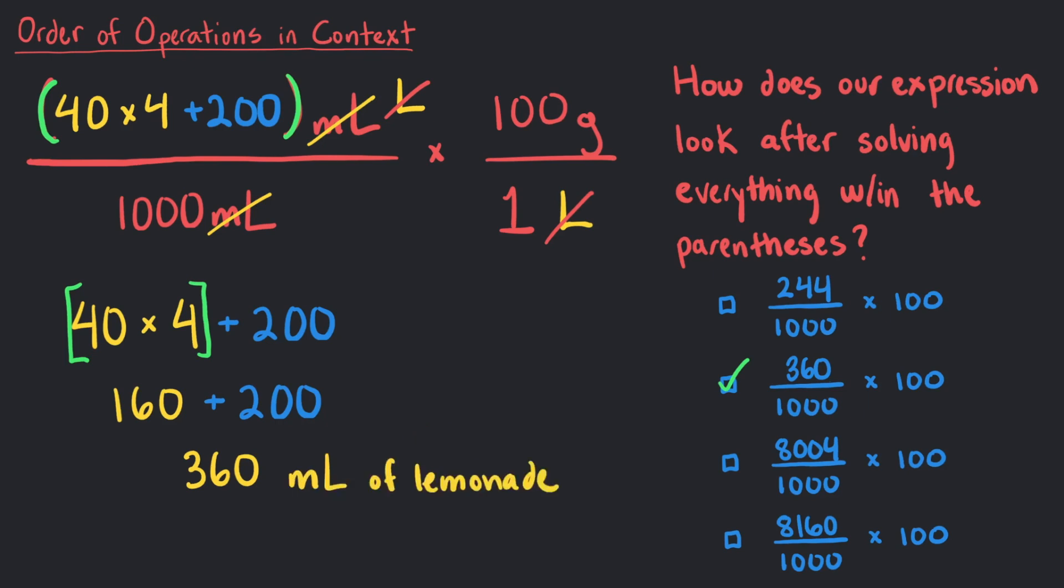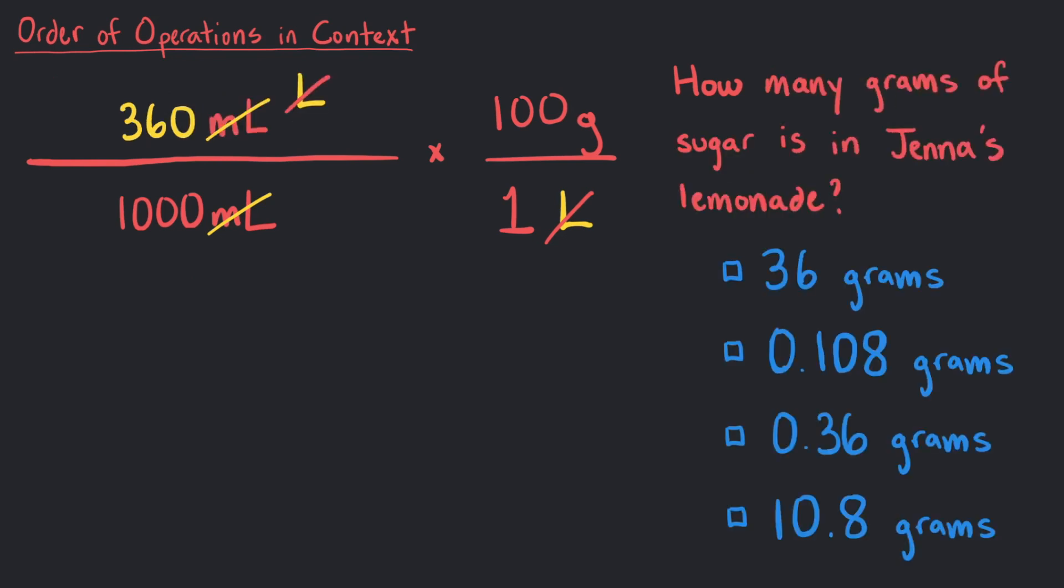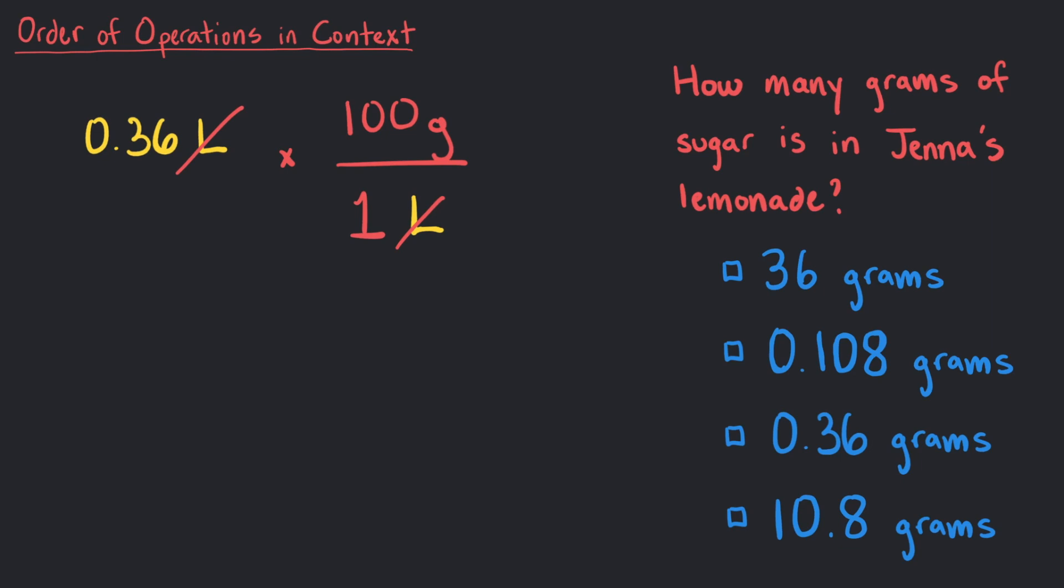Why don't you try to solve the rest? How many grams of sugar is in Jenna's lemonade? Jenna makes 0.36 liters of lemonade from her recipe after dividing 360 milliliters by 1000. Lastly, we will multiply 100 by 0.36 to get 36 grams of sugar. It's important to keep track of all the information we are given and note what and why we are doing each math calculation as we get closer to finding the overall solution.